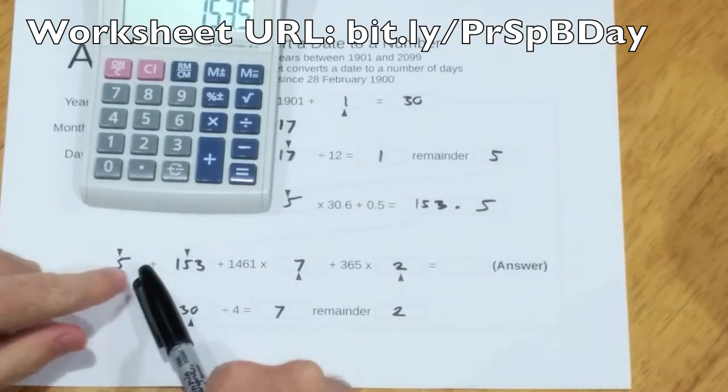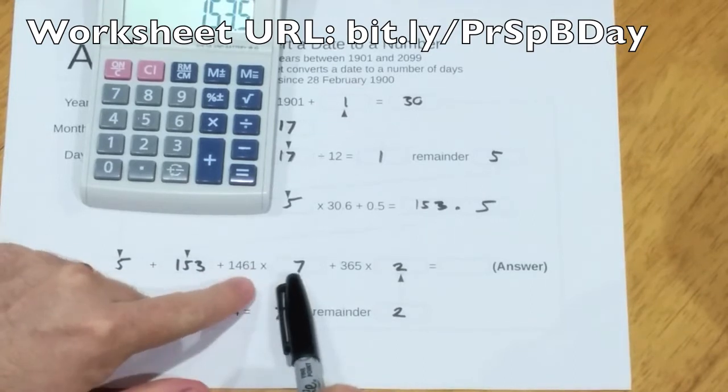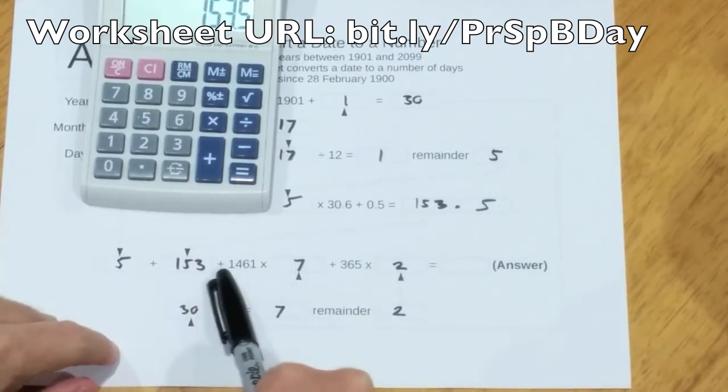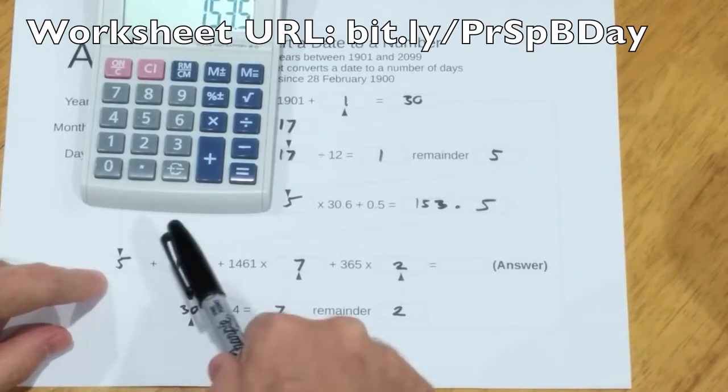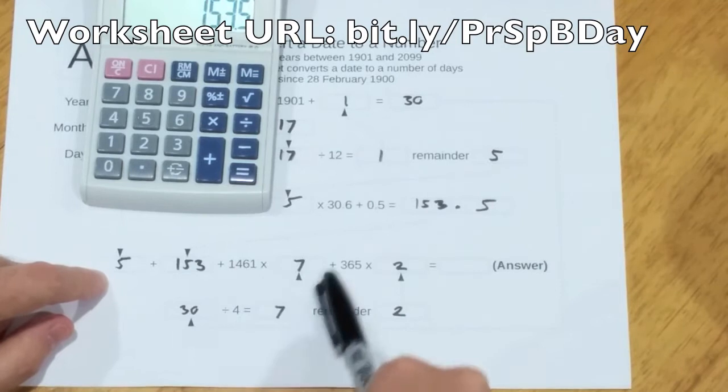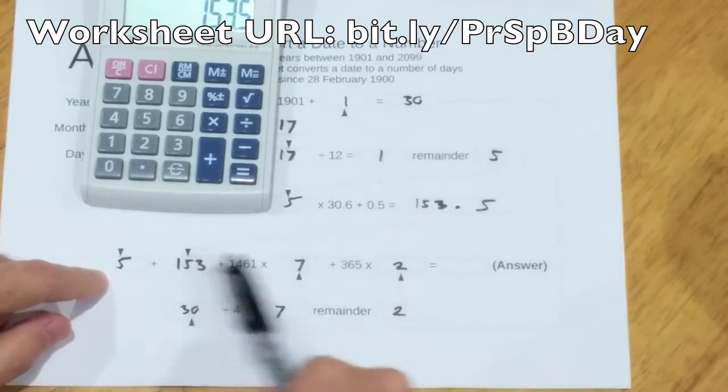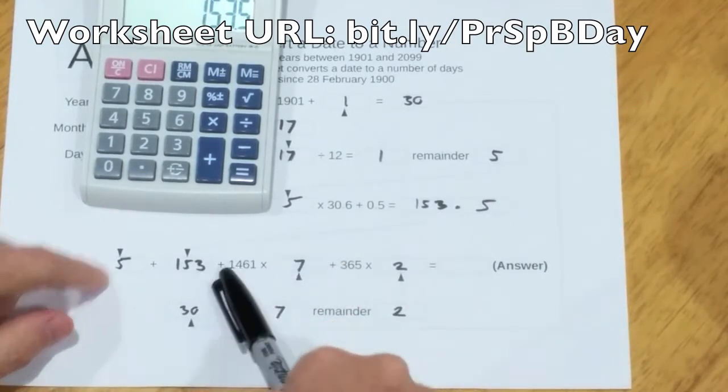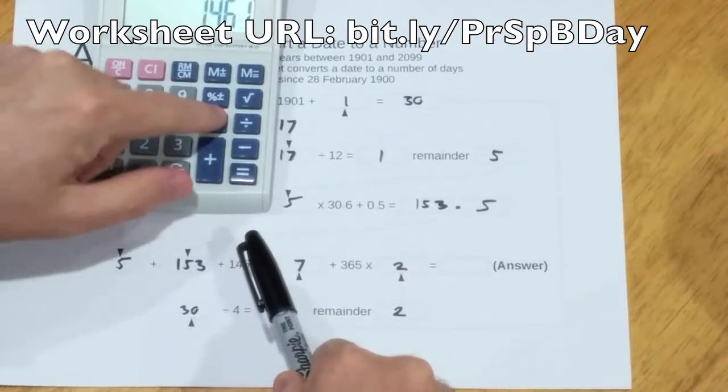And finally here, remember you must take into account order of operations. So these multiplications get done. You don't just say 5 plus 153 plus 1,461, and then multiply that whole thing by 7. No, no, no. You multiply 1461 by 7.